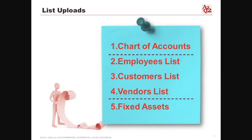Here are the five types of data elements that you're going to upload. The first one is the chart of accounts, second is the employee list, third is the customer list, fourth is the vendors list, and lastly fixed assets. There is a particular sequence you need to follow — chart of accounts is always first, then you can upload employees, customers, or vendors. Fixed assets is its own separate set of data covered in a different training session.